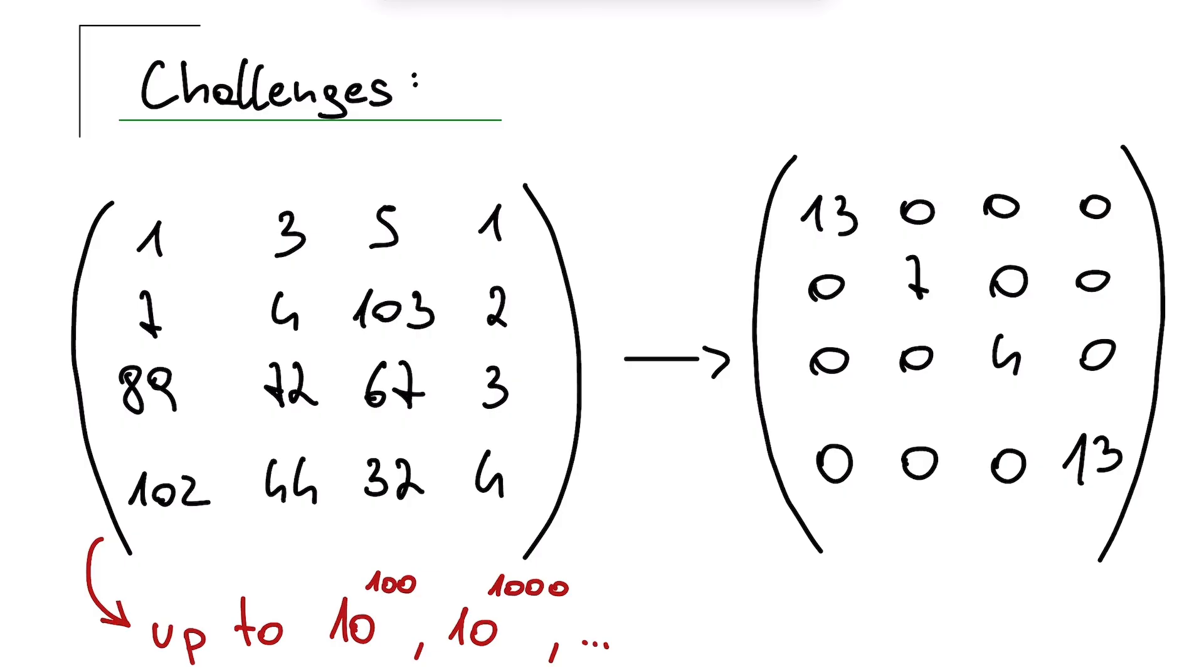The real problem arises when we want to describe molecules with say 100 atoms and we want to do it fully, without approximations. Then our matrices are no longer small, like 4x4, but unimaginably huge, with dimensions on the order of 10 to the power of 100 by 10 to the power of 100 or even larger. That means we'd have a matrix with a 1 followed by 100 zeros rows and the same number of columns. A matrix of that size is not only impossible to compute, it's impossible even to write down. And that is exactly why fully describing large molecules becomes computationally intractable.